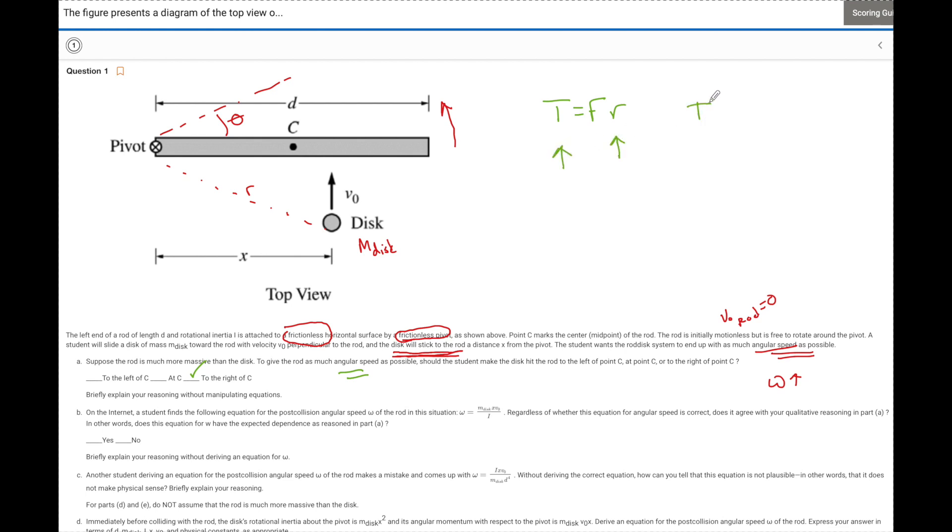And torque also equals I alpha, where alpha is equal to a change in W over T. So the larger the alpha, the greater the change in momentum, and therefore the greatest theta, the greatest final speed. So as I increase torque, I increase alpha, I increase speed. I want this disc to hit the rod further from the pivot point, the farthest point from the pivot point I can. This right here would be the ideal spot.